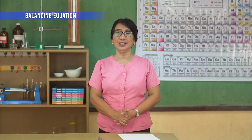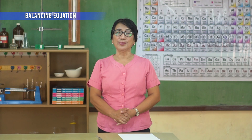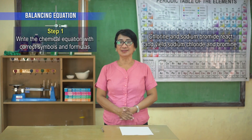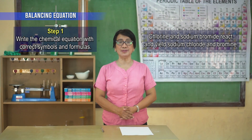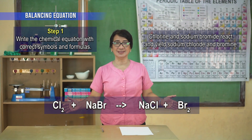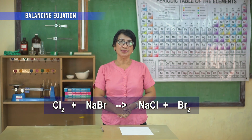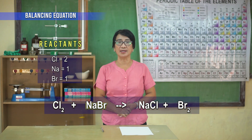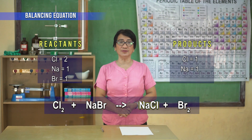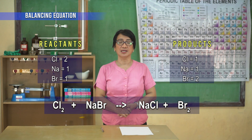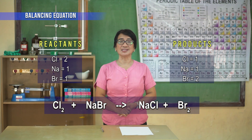For our second example, let us try to balance this: Chlorine and sodium bromide react and yield sodium chloride and bromine. Step one: write the chemical equation with correct symbols and formulas. Step two: on the reactants side, there are two chlorine atoms and one molecule of sodium bromide. On the product side, there are one molecule of sodium chloride and two bromine atoms. As we can see, the number of chlorine and bromine atoms are unbalanced. Therefore, the chemical equation is unbalanced.